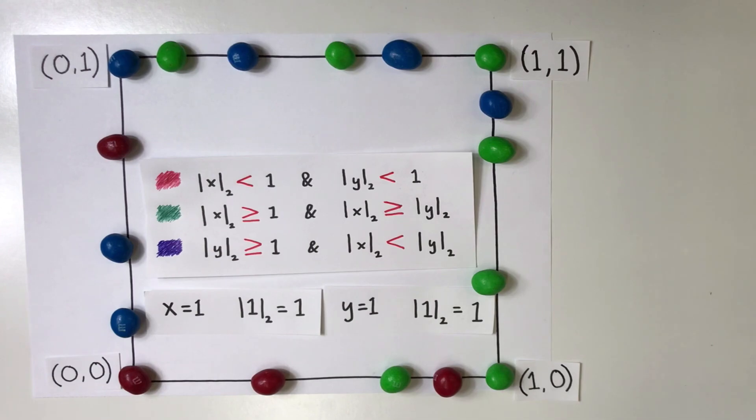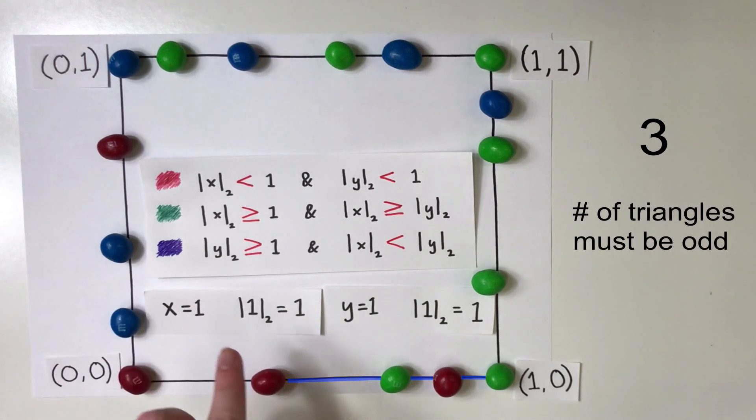Now, because we know that there are an odd number of red-green edges on the perimeter, we know that there is at least one red-green-blue triangle.